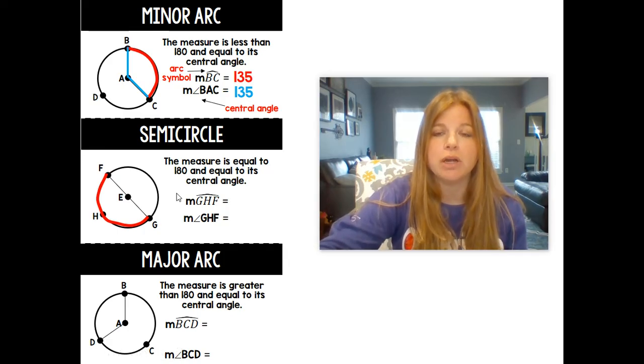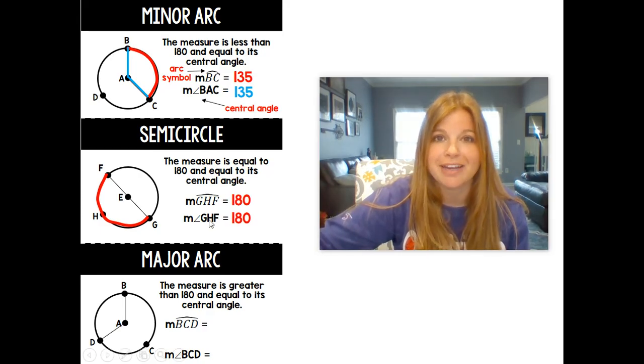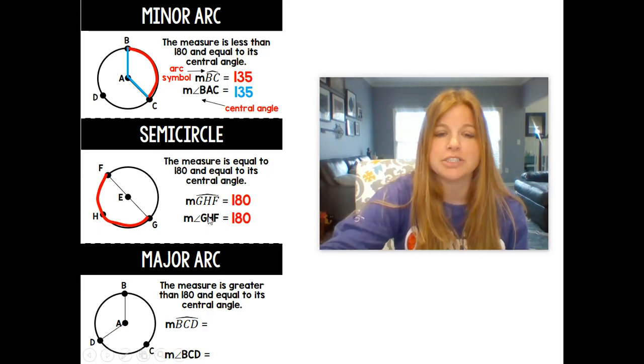So the measure of the arc of G, H, F is 180. That would mean that that angle of G, H, F, which kind of looks ridiculous, it would also be 180. And actually that should say G, E, F. I got to fix that because it's a straight line.